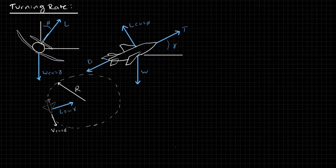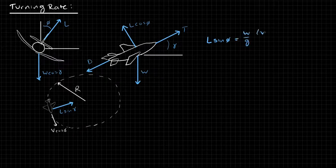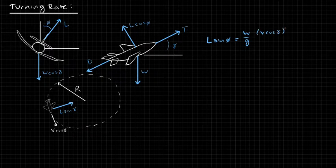So let's review some of our equations here. So from our force balance, we had that L sine phi is W over G, V cos gamma squared, divided by R.